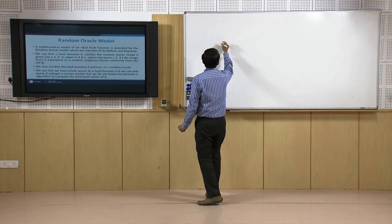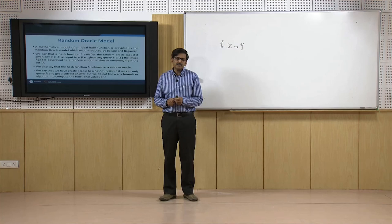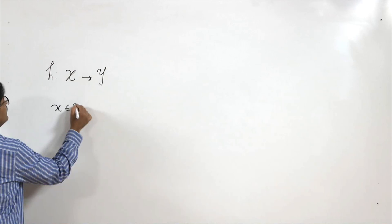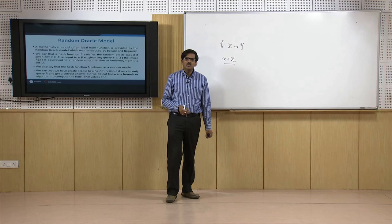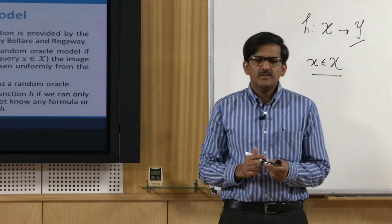Let us try to understand this briefly. It basically means that the function which we are using as a hash function should have some kind of random behavior. It means that when I am given an input x to the hash function, the output will be somewhat indistinguishable from a random value from the set Y.